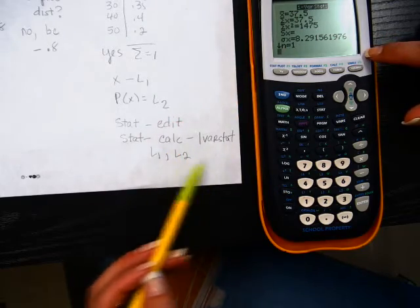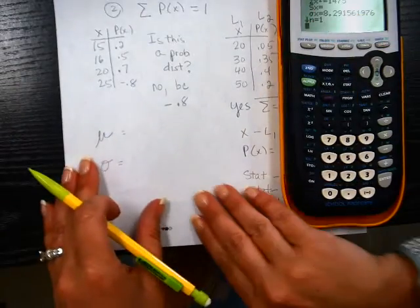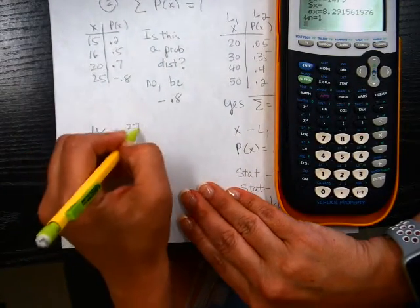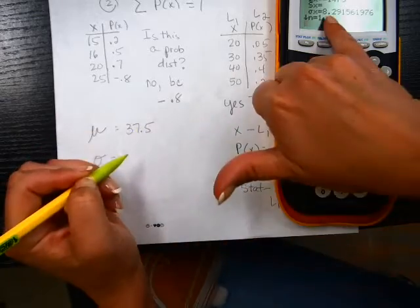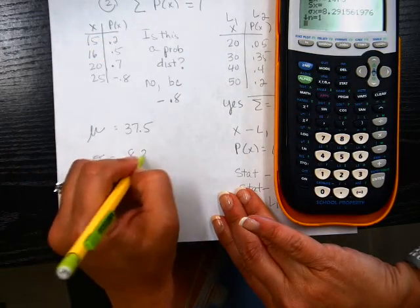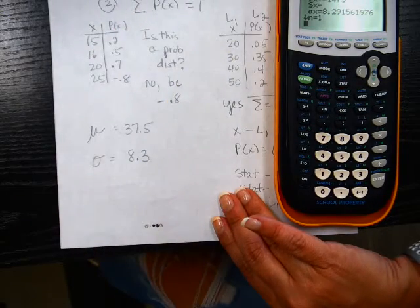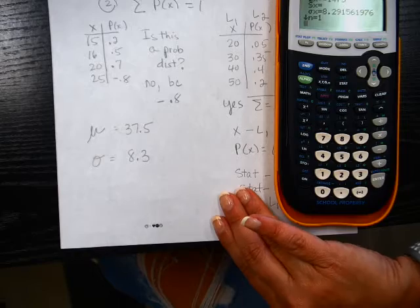So my mean is the very first answer. So the mean is 37.5. And my standard deviation is going to be 8.3. We're going to go to one decimal because all of these had no decimals. So that is going to be my standard deviation.